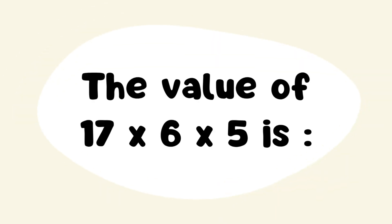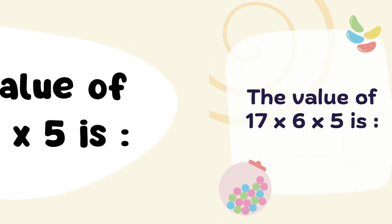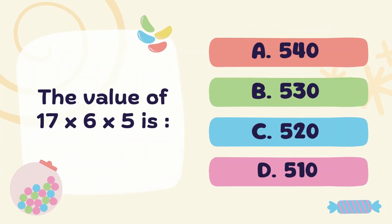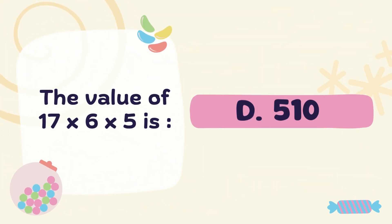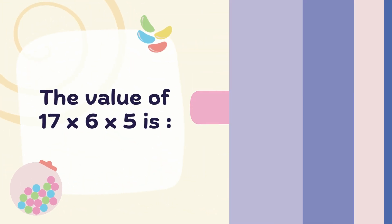Next question: The value of 17 multiply 6 multiply 5 is? Correct answer: Option D. 510.